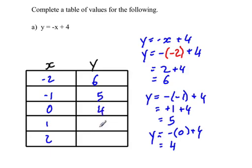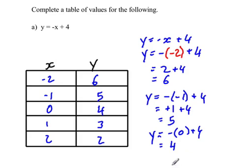And so on. The next points, if you've filled out your substitution correctly — the next one will be negative 1 times 1 plus 4, which is 3, and then 2. So show your work.